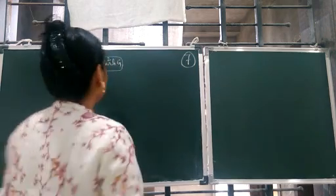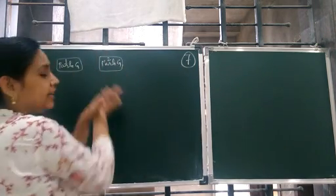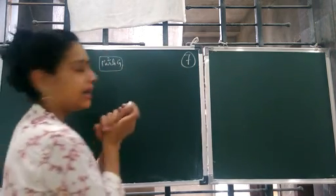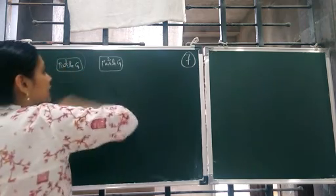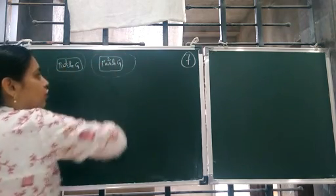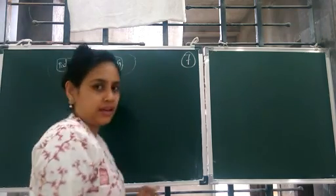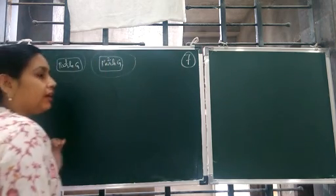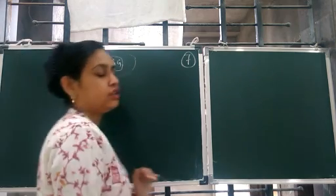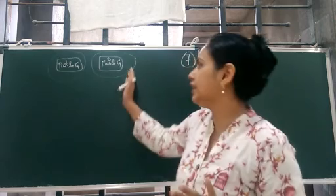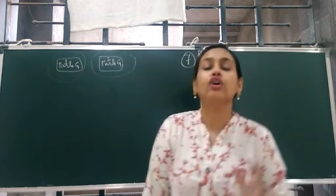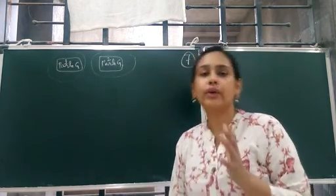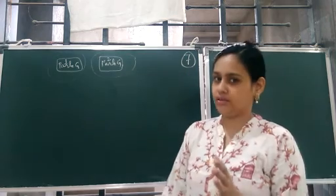Correct? So if this coinciding is possible, can we say this Parle-G is equal in shape and size to this Parle-G biscuit? Yes, we can say. So such figures which are equal in shape and size are known as congruent figures.